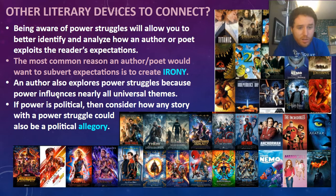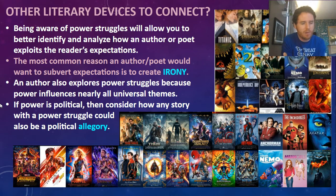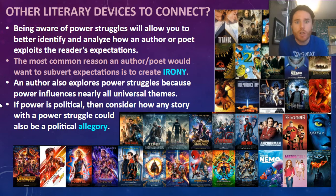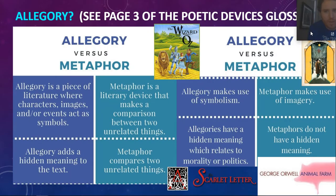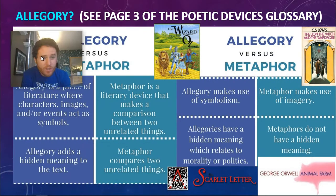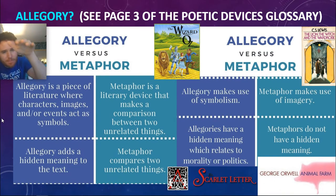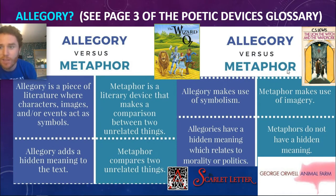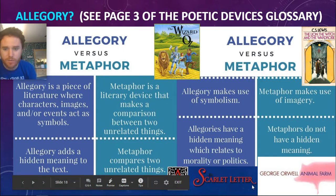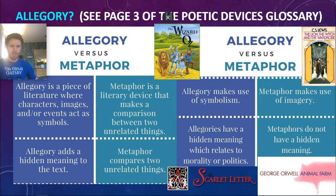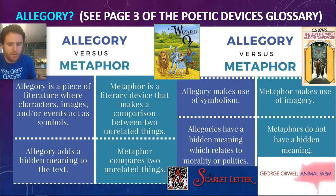An author also explores power struggles because power influences nearly all universal themes. If power is political — which it is — then consider how any story with a power struggle could also be considered a political allegory. What's an allegory? It's a type of story that basically tells one story on the surface, but there's a deeper story being told through the subtext. The most popular examples are The Wizard of Oz, The Lion the Witch and the Wardrobe, Animal Farm, even The Scarlet Letter.